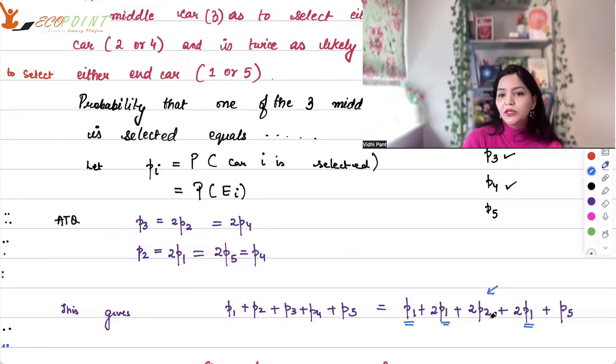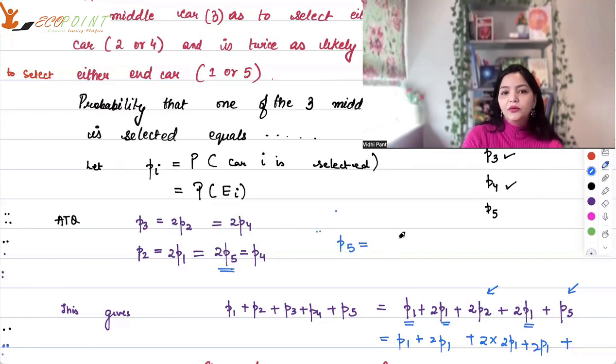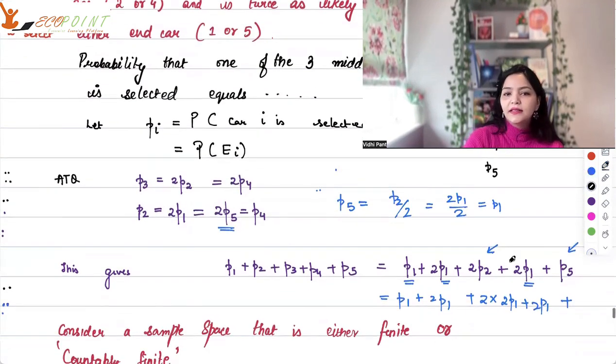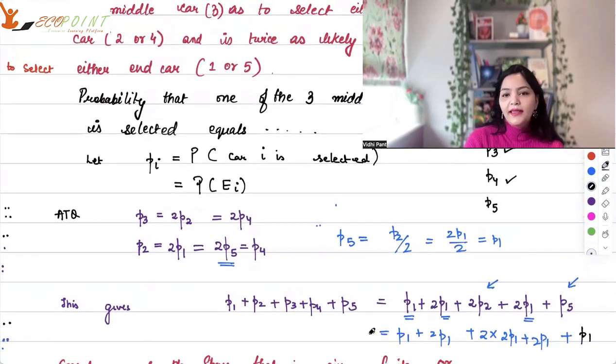So from here, what do I know? I know that P1 plus twice P1 plus twice P2, twice P2 would be 2 into... I know that P2 is twice P1, so twice P1 plus twice P1 as it is plus P5. I can take P5 in relation out here. However, so P5 is equal to P2 upon 2 and that means it is equal to 2P1 upon 2. That means it's just P1, right? So what we can say is that P5 is basically equal to P1. And this, my friends, will give you the sum as 10P1.